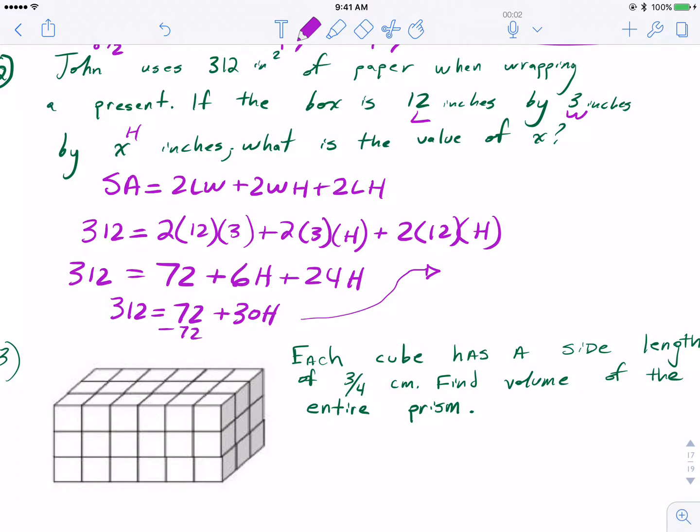I'm going to subtract 72 from both sides. That's going to give me 240, so 240 should equal 30H. And now dividing both sides by 30, we should get H equals the missing dimension, which in our case was the height, is 8. So what's the value of x? 8 inches, or just simply 8, because it said x inches in the original question.